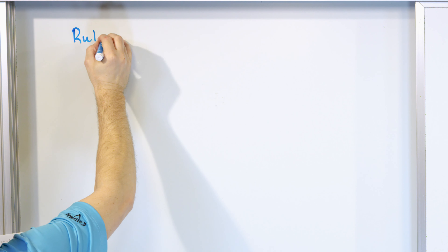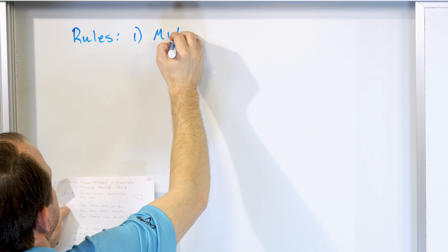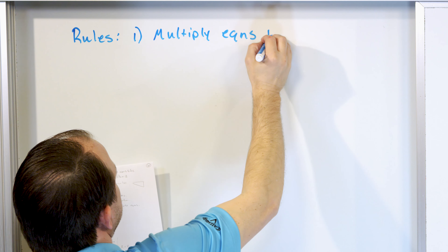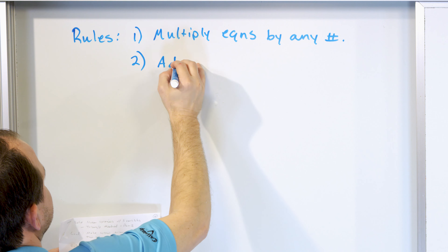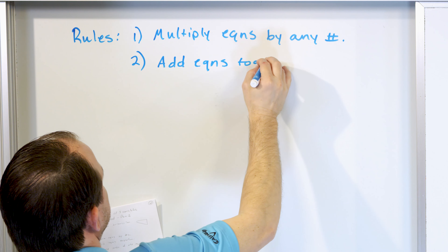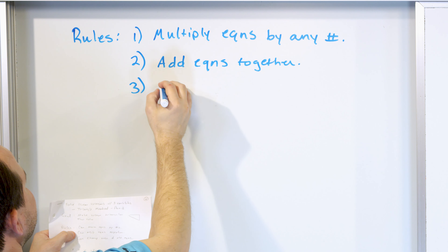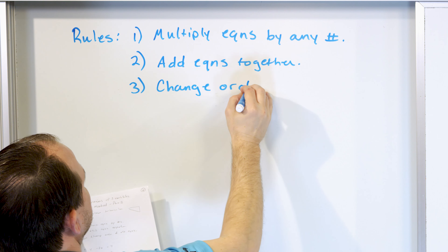The third thing you can do is change the order of the equations - you can move one equation to the top or bottom. The order doesn't actually change anything. So to summarize: you can multiply equations by numbers, you can add them, and you can change the order. Those three things allow you to take any system of equations and change it into triangular form. Let me write the rules down: Rule 1 - multiply equations by any number. Rule 2 - add equations together. Rule 3 - change the order of equations.